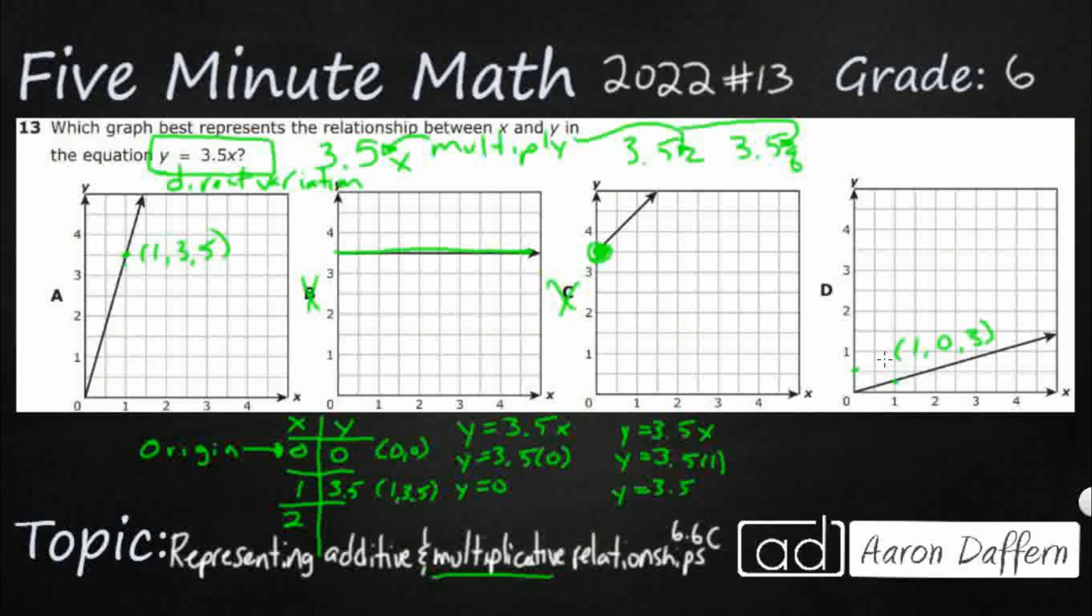y equals 3.5x. Let's change our x into 2. So 3.5 times 2, double it is 7. So 2, 7.